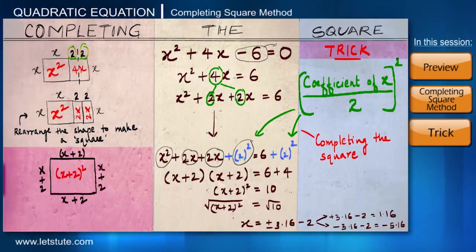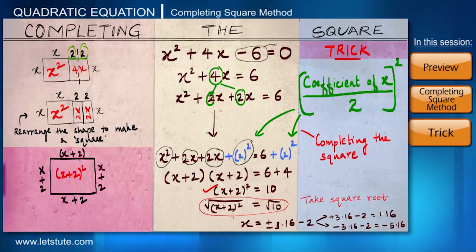And in the end, we know once we get the square terms, we just have to take the square roots in order to find two equal values of x. So I hope completing the square method to solve a quadratic equation is clear to you.